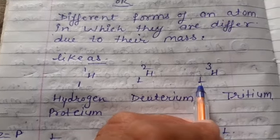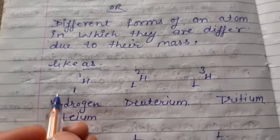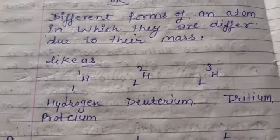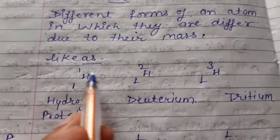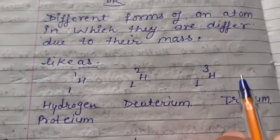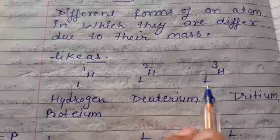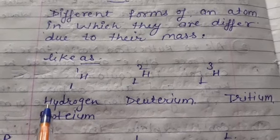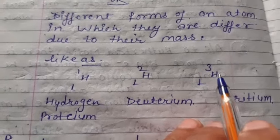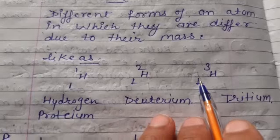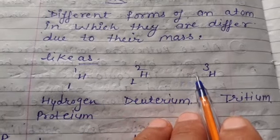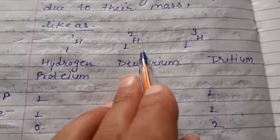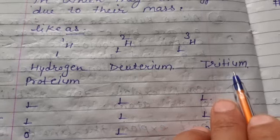The lower number, which indicates the atomic number, always controls the chemical properties. The upper number, which shows the atomic mass, always controls the physical property of any element. Since the lower number (atomic number) is the same, isotopes have the same chemical properties but different physical properties. ¹H¹ is called protium, ¹H² is deuterium, and ¹H³ is tritium.